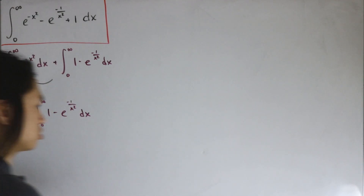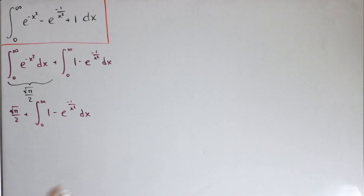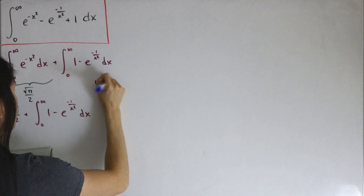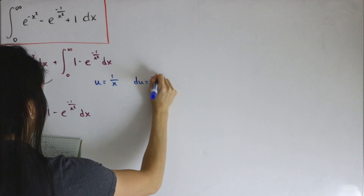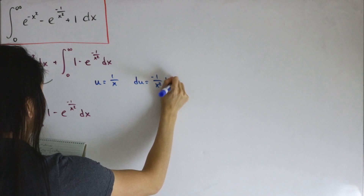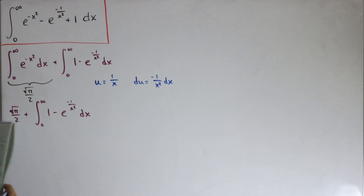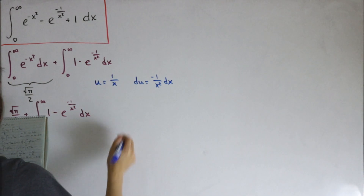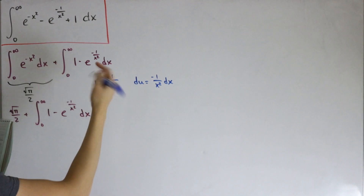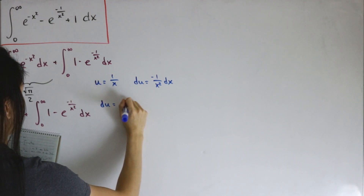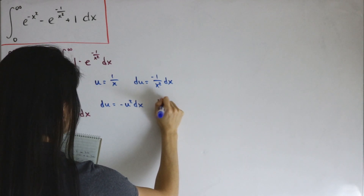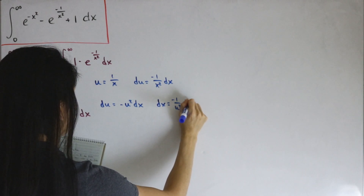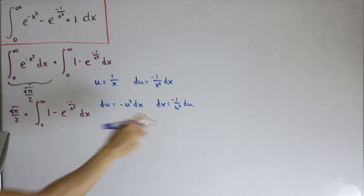Now we'll do a u-substitution on this integral. Let u equal one over x. Differentiating both sides, du equals negative one divided by x squared, dx. Since negative one over x squared equals negative u squared, we have du equals negative u squared dx, so dx equals negative one divided by u squared, du.